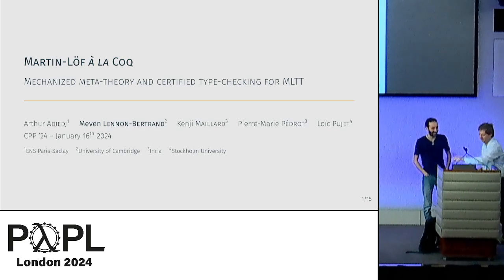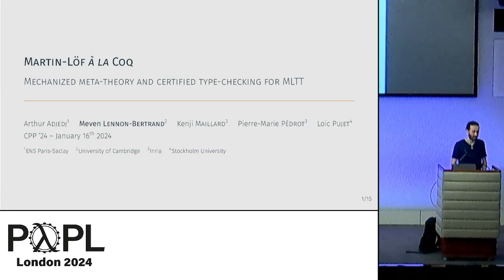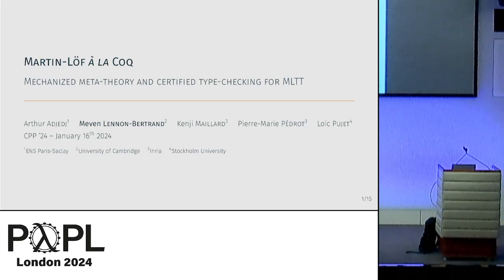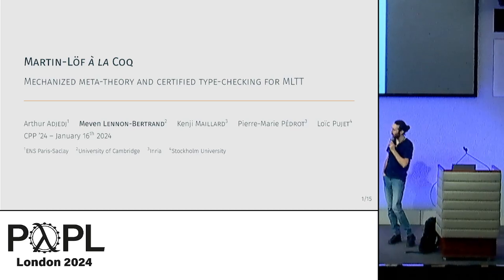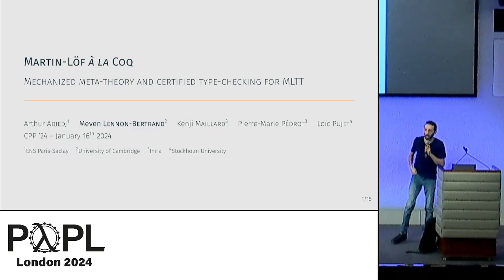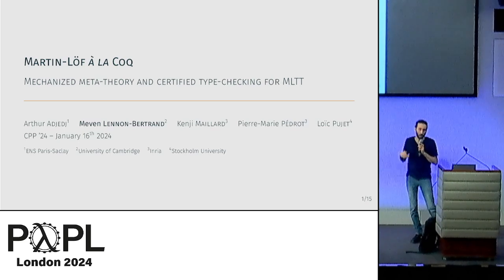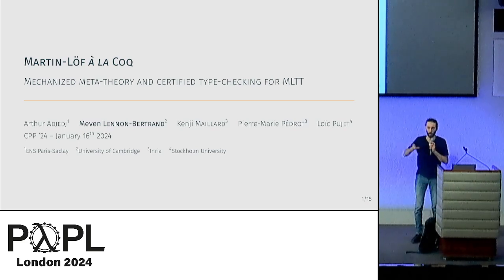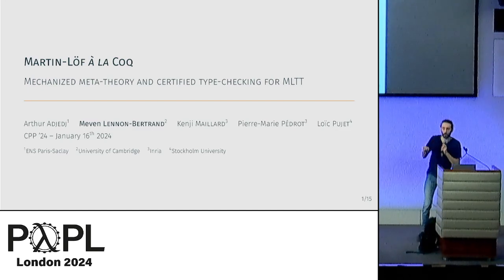We have a distinguished paper that is going to be presented by Mevin on Martin-Löf type theory. This is work going in the direction of obtaining mechanized metatheoretic results of the kind of foundations that we use for our proof assistants, and in this specific case for a Martin-Löf type theory.